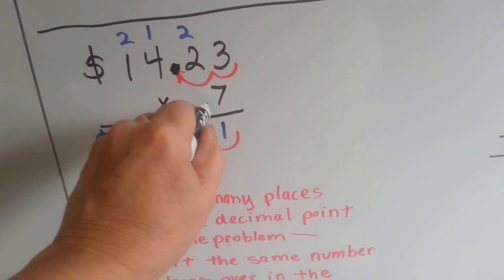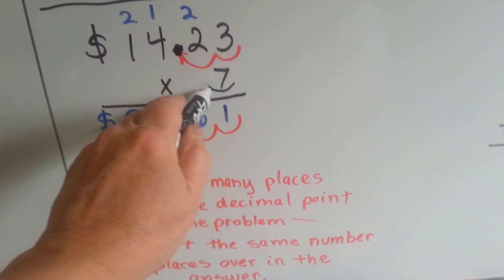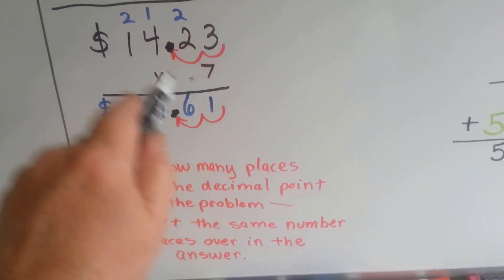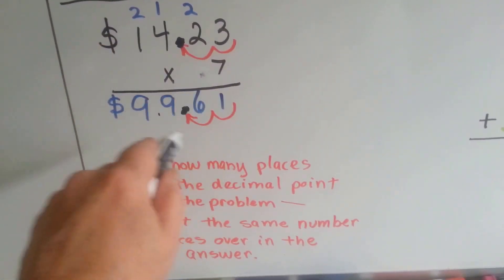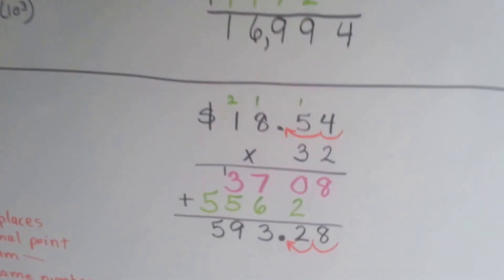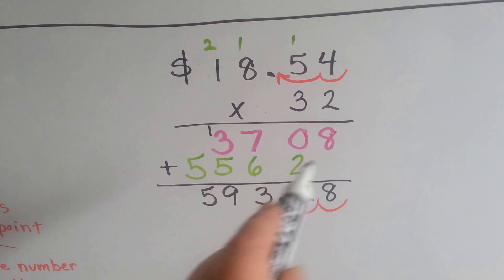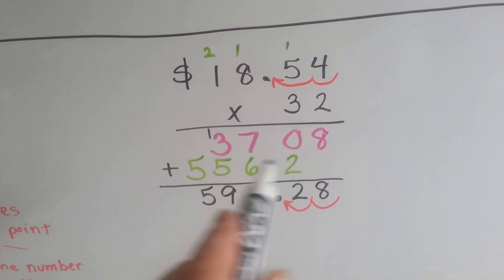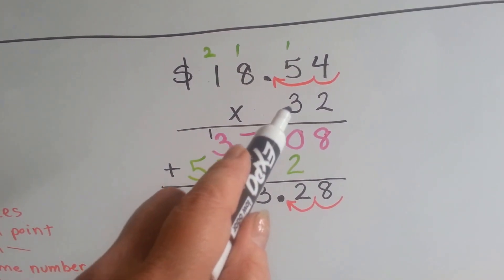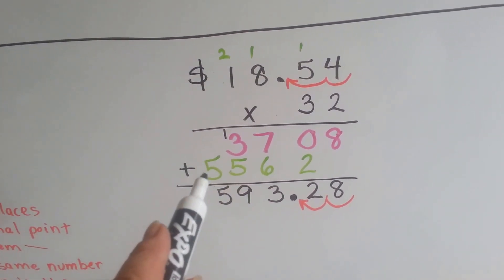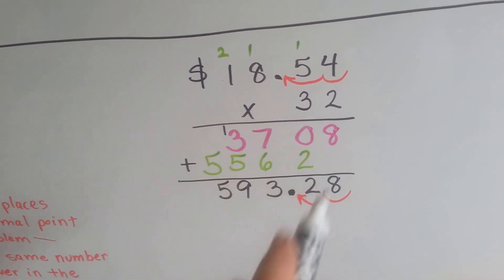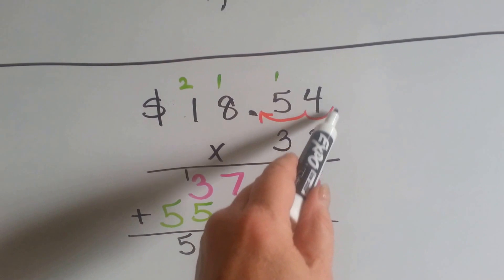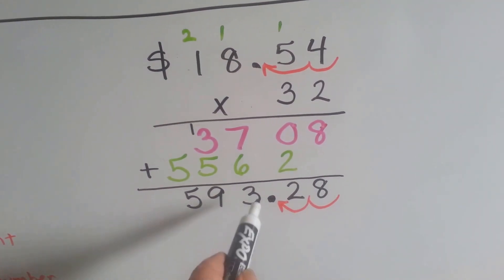If this one had a decimal point, then we'd have to count that one too — it would be 1, 2, 3, and it would have gone over here. So however many decimal spaces there are in the problem is how many you're going to move over in the answer. Let's try this one — same thing as the two-digit number, except we put the decimal space in, two spaces over. We did 2 times 4, 2 times 5, 2 times 8, and 2 times 2, and got 3,708. Then we multiplied 3 times 4, 3 times 5, 3 times 8, and 3 times 1, and got 5,562. When we added them all up, we got 59,328. I counted how many decimal places over the decimal point was — 1, 2 — and that's where I put it in my answer: 1, 2.